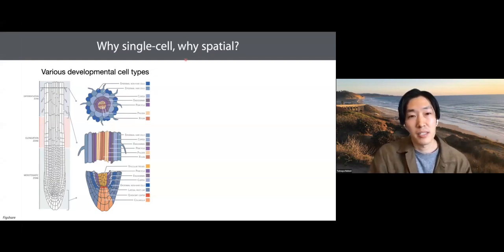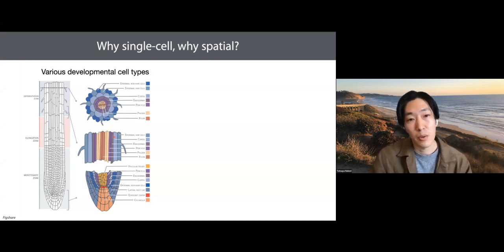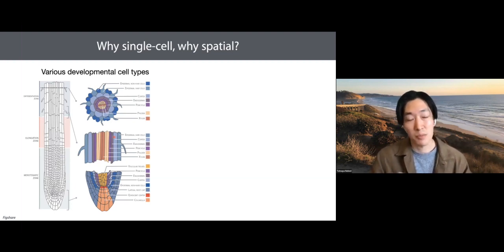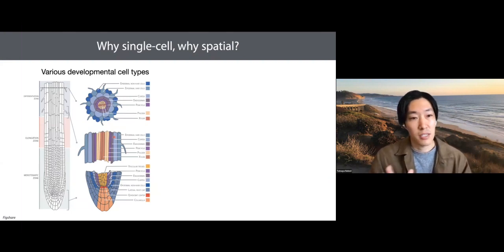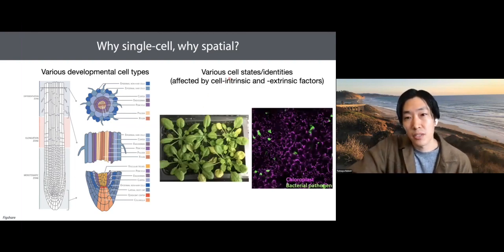There are many cases where single-cell and spatial omics can be quite useful. Plants are made of different cell types with different functions and different molecular networks, so ideally any measurement should be done in a cell-type-aware way. The concept would be to separate root and shoot whenever possible to gain more information — if no difference, you can just combine them afterwards. There's a cost barrier right now in single-cell experiments, but it's going to change quickly. A more complicated scenario is when you deal with various cell states and identities within the same developmental cell type.